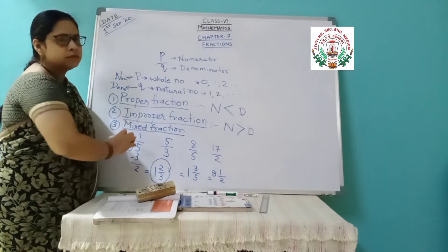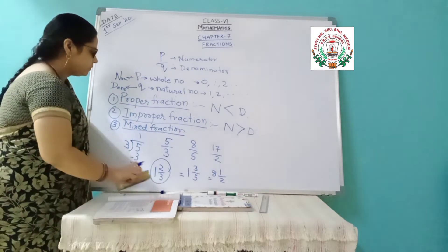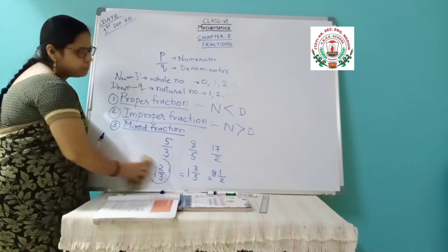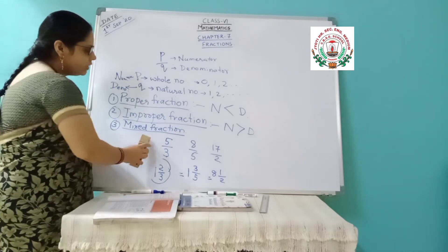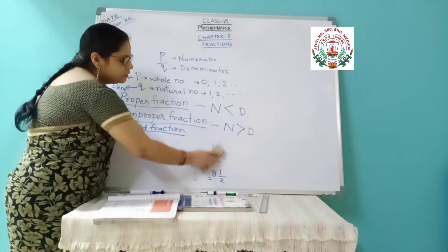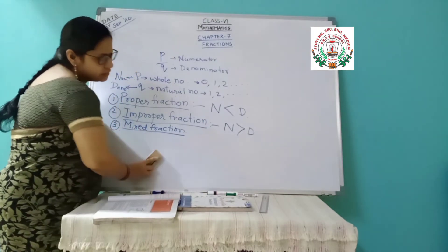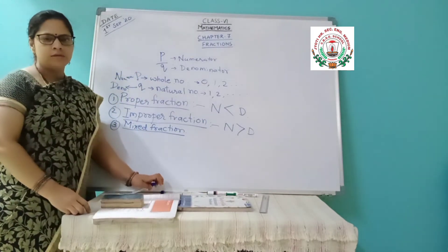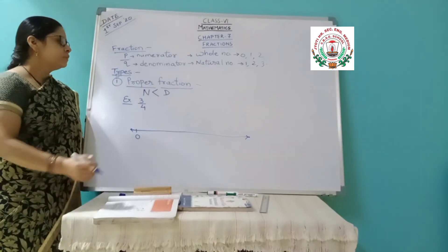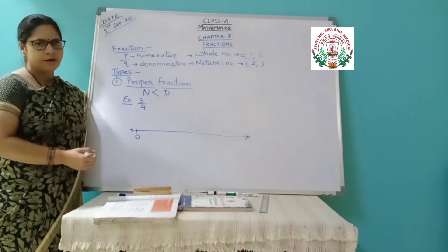So these are the three main types of fractions. Now the next part — we will see how we are denoting a proper fraction on the number line. The number line we have studied in the previous chapter on integers. So now we will come to the first type of fraction, that is the proper fraction, which we have just now seen — where the numerator is smaller than the denominator.